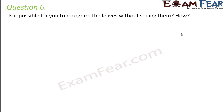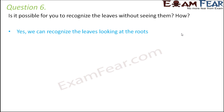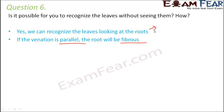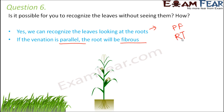Question number 6: is it possible for you to recognize the leaves without seeing them? How? There is a relationship between leaves and roots, so if we are not allowed to see the leaves, we can look at the roots and establish a relationship between the two. If the venation is parallel, the root would be fibrous — so if the roots are fibrous, that means they have parallel venation. If the roots are tap roots, they have reticulate venation.